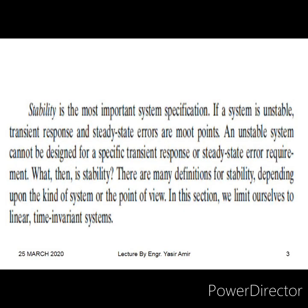Stability is the most important system specification — it is a crucial property that a system must have. If a system is unstable, the transient response will not converge to zero and the steady-state errors will not converge to zero with the passage of time. An unstable system cannot be designed for specific transient response or steady-state error requirements.